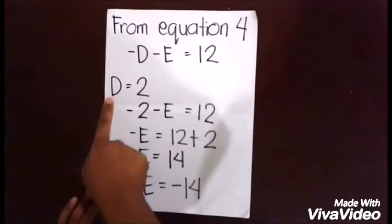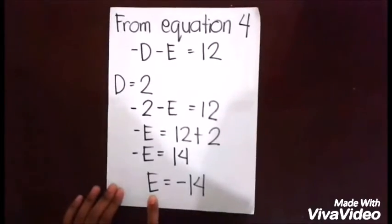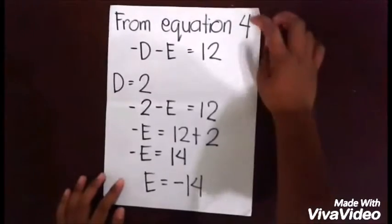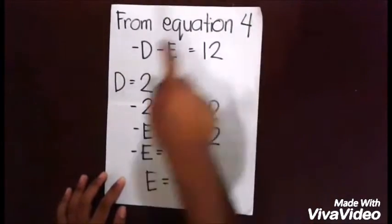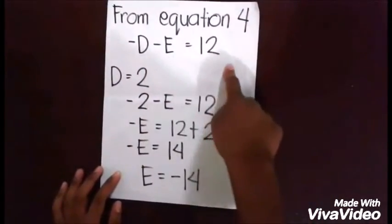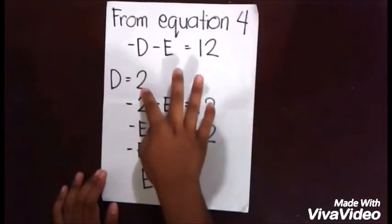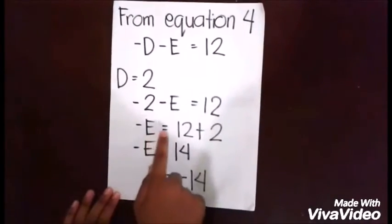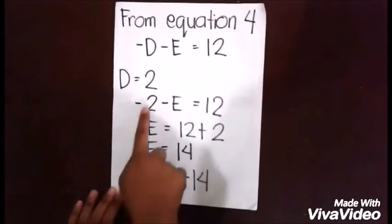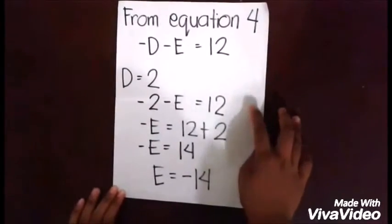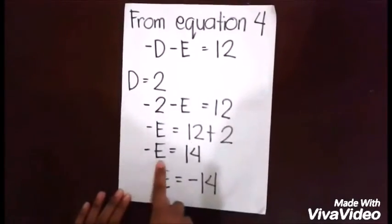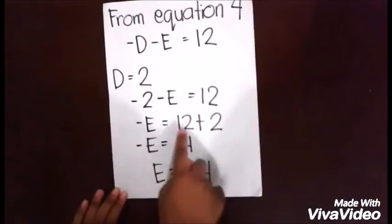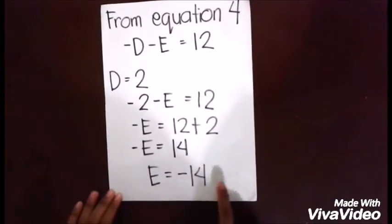Since you obtained d = 2, you can now find e using Equation 4: -d - e = 12. Substituting d = 2: -2 - e = 12, so -e = 14. Dividing by -1 gives e = -14.